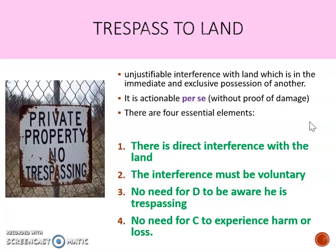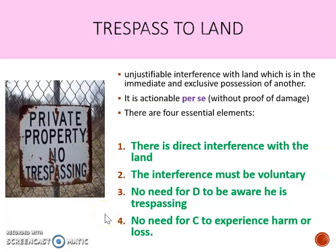There are four essential elements. Firstly, there has to be a direct interference with the land. Secondly, the interference must be voluntary. Thirdly, there is no need for the defendant to be aware that he is trespassing. And fourthly, there is no need for the claimant to experience any harm or loss.